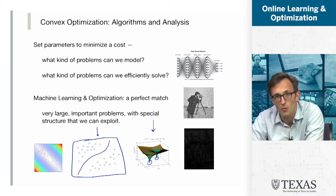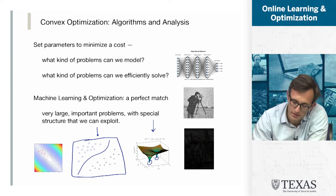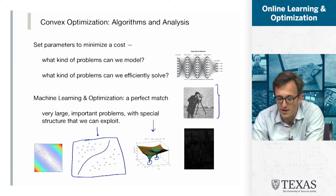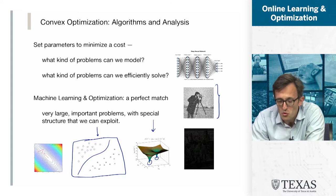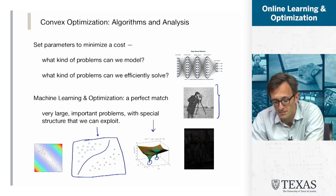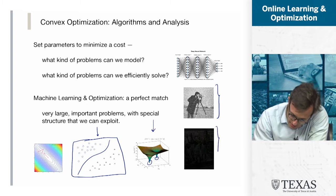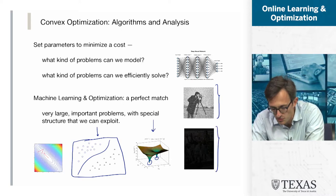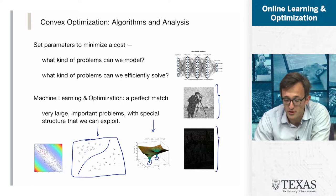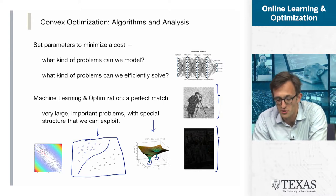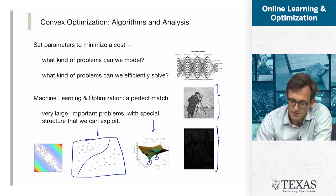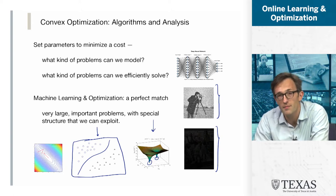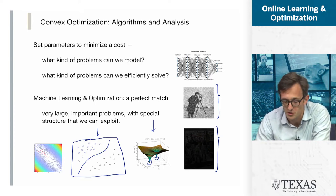Let's turn to an even more intricate example. Here's a noisy picture of the cameraman, famous in image processing — the problem is to remove all the noise to the best of our abilities. Another problem from image analysis: this is a picture where I deleted 90% of the pixels at random, and the challenge is to fill in those missing pixels to make the image look as natural and as good as possible.